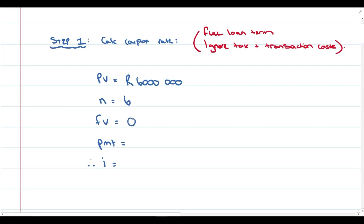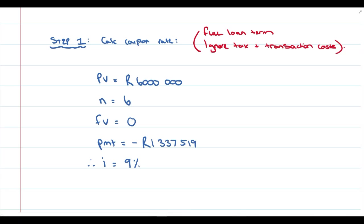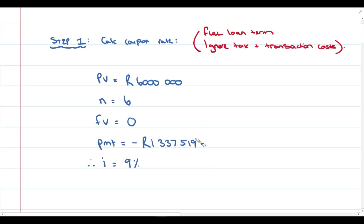The future value is zero because there's no bullet or balloon payment at the end — the loan is repaid in equal annual installments. The payment amount is negative 1,337,519 rand as a cash outflow each year. Solving for i gives you 9%. So the interest rate — the coupon rate — on this loan is 9%, and the market-related rate is 10%. Now that we know the coupon rate, we can move to Step 2 and calculate the market value.